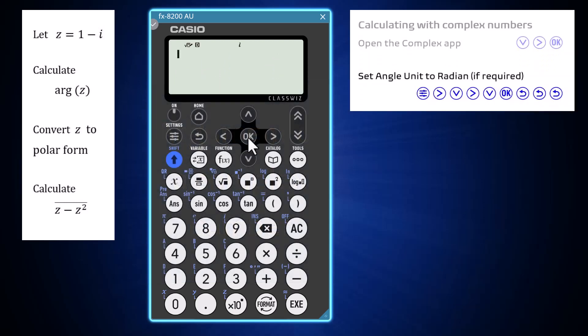It is most common to calculate the argument of a complex number in radians. As you can see from the small d on the top of the screen, my 8200 is currently using degrees as its angle unit. To change this to radians,